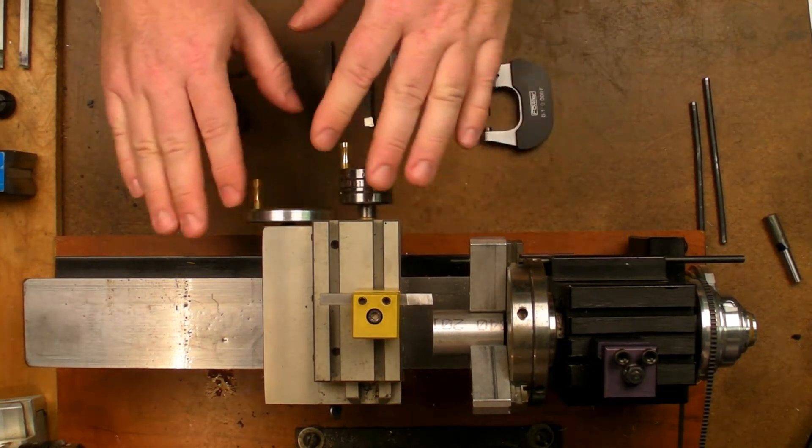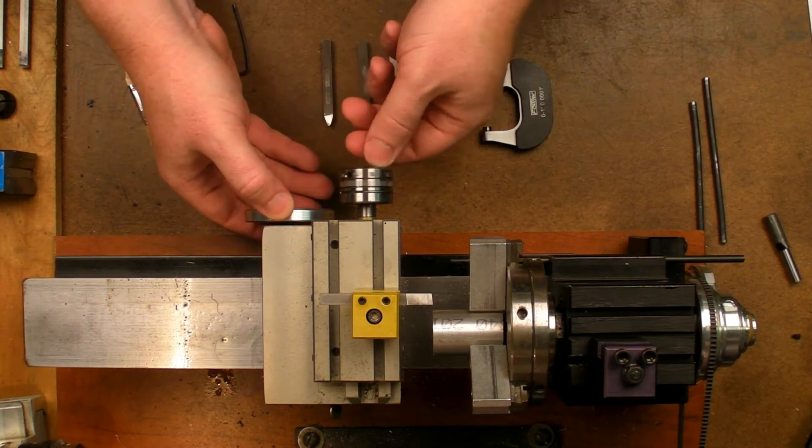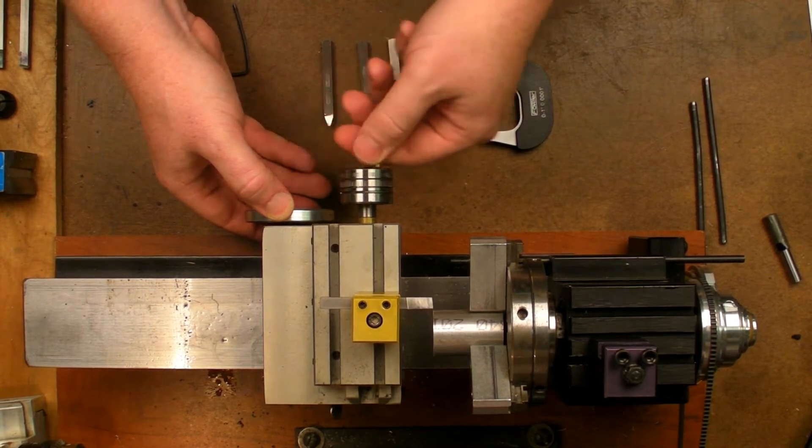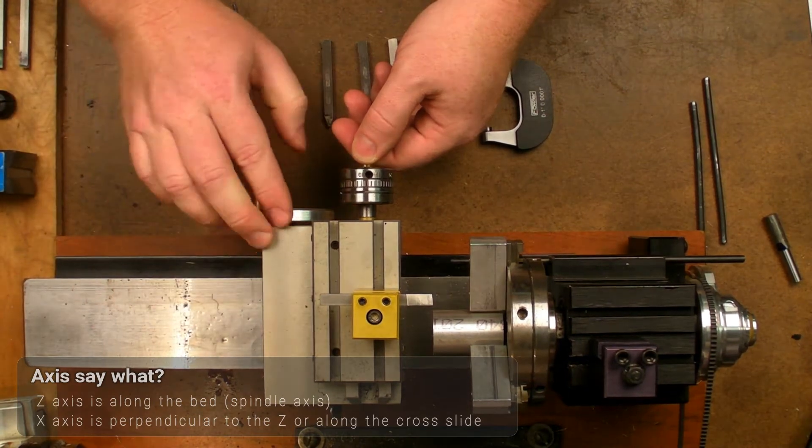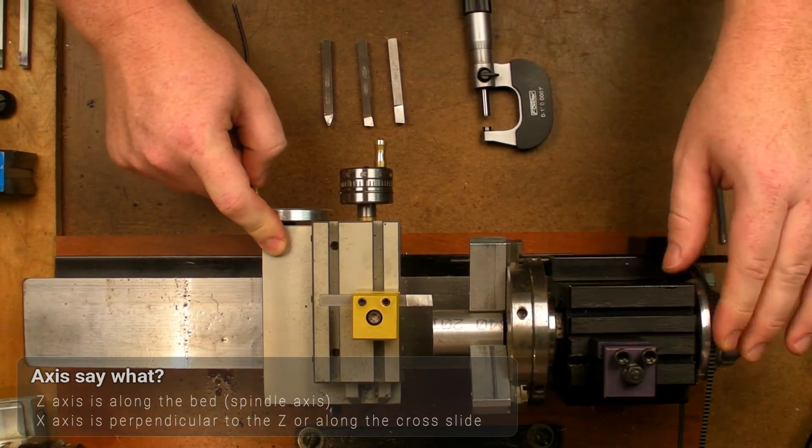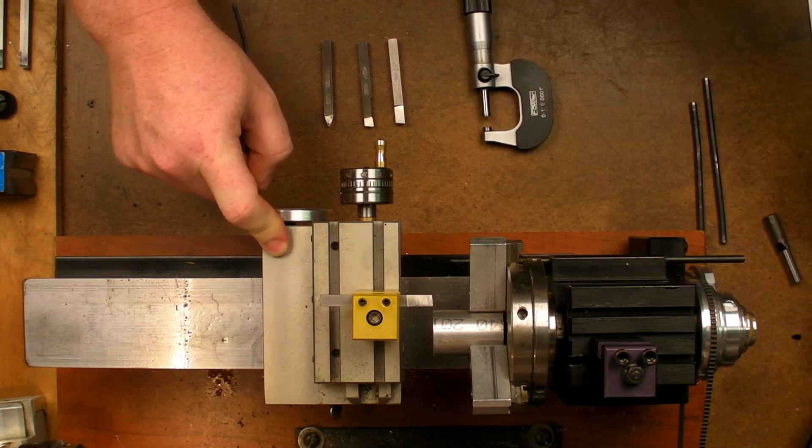And I'm going to be moving the cross slide. In general, you want to lock whichever axis you're not going to be using. So we're going to be using the cross slide in this direction. It's referred to as the x-axis, and our z-axis, which is along this direction, is going to be locked. I've got it set for the lowest speed, and we're going to power it up.